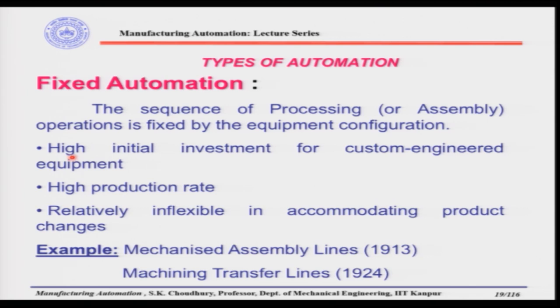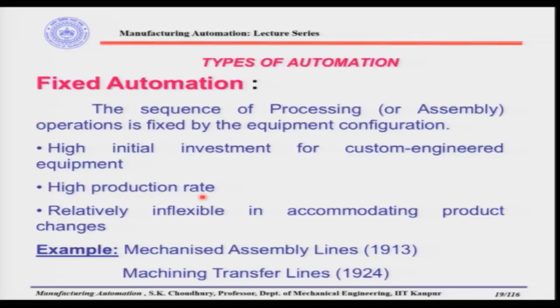The first key characteristic of fixed automation is the high initial investment for custom engineered equipment. The second characteristic is a very high production rate, because the specialized machine operates only for producing that particular part with very high precision and efficiency. However, these machines are relatively inflexible. Examples include mechanized assembly lines invented in 1913 and machining transfer lines invented in 1924. Fixed automation is used primarily in mass production.